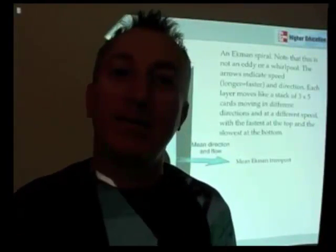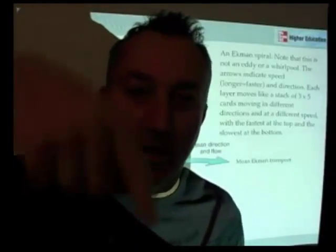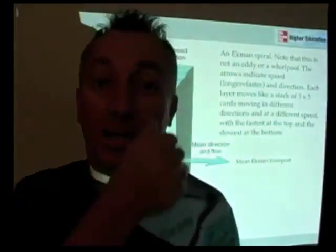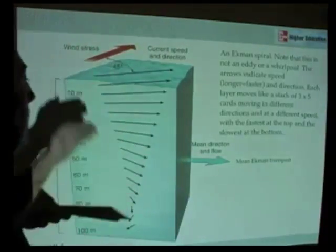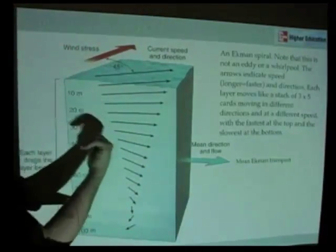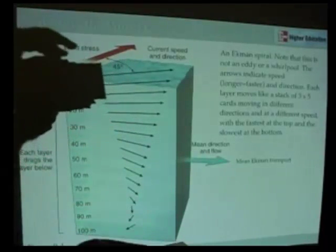The Ekman spiral isn't a spiral in the sense of a spiral staircase or water plummeting down a whirlpool or anything like that. It's only a spiral in the sense that we are talking about layers of water moving in different directions. So there's no whirlpool effect here.